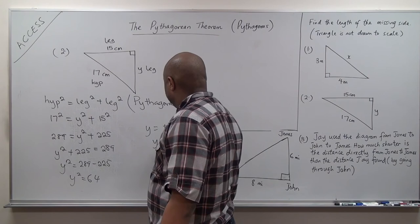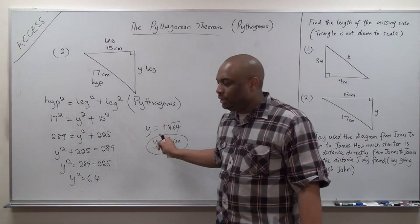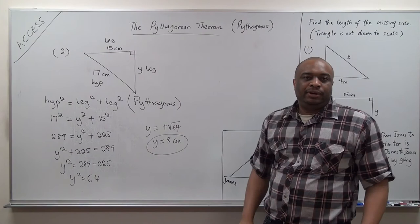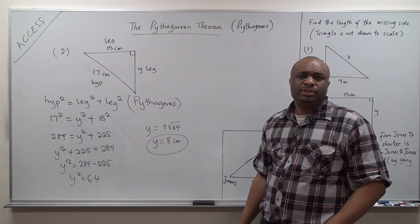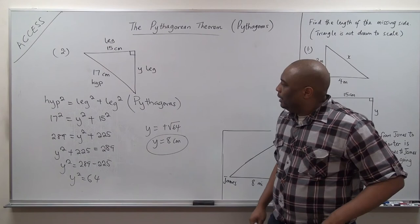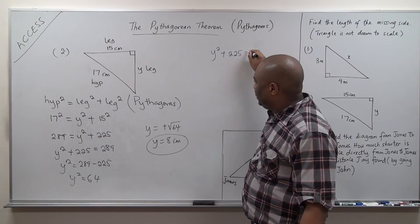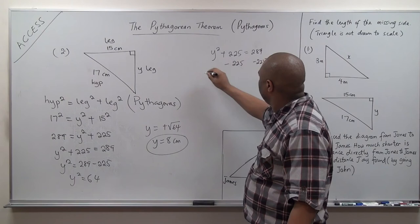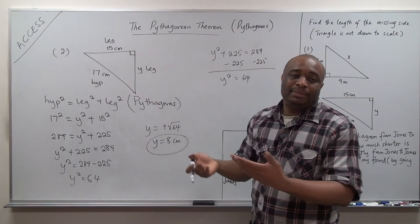You might ask why I use positive square root of 64 — because square root can be either positive or negative. View my video on roots to understand. We only concern ourselves with the positive square root. Some teachers will do it by subtracting 225 from both sides directly, then y squared equals 64. It's the same thing.